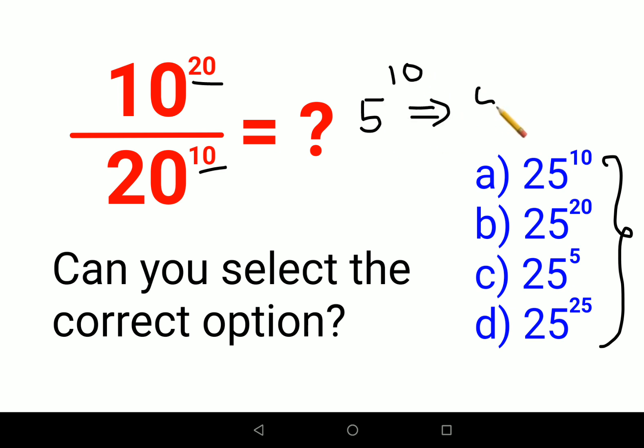actually club this together. So 5 raised to 2 becomes 25, raised to 5. So option C is your answer for this particular question. That's it for today, I'll see you in the next video.